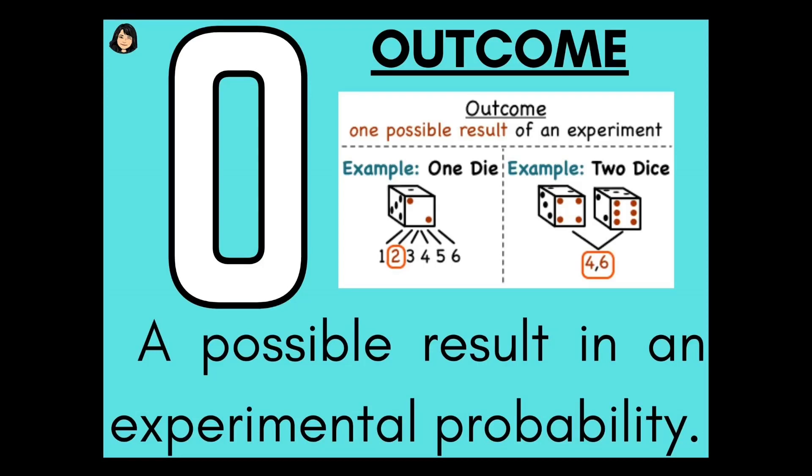Letter O, Outcome. A possible result in an experimental probability.